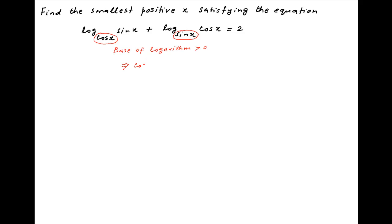Which means that cos x should be positive for the first term to be real and sin x should be positive for the second term on the left hand side to be real. This is possible only when x lies in the first quadrant or x lies between 0 and pi upon 2.